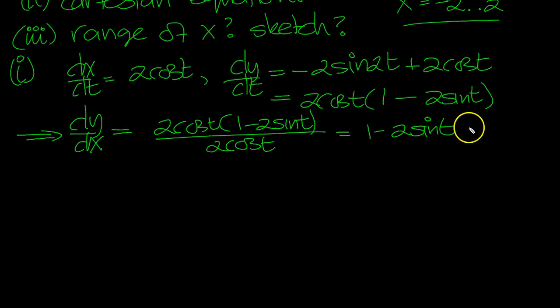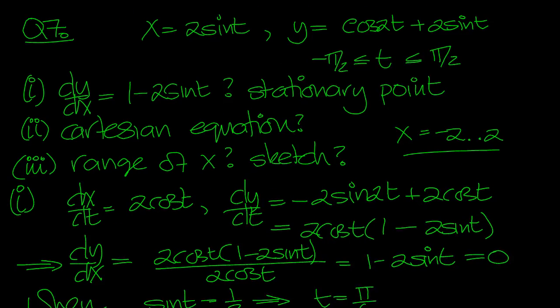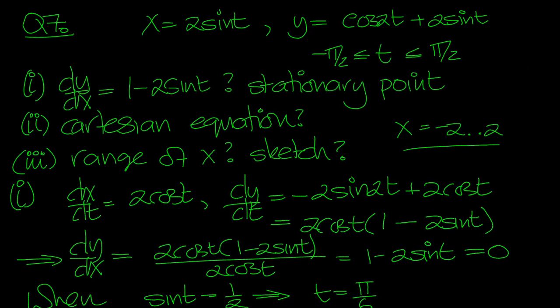Stationary point happens when it equals 0, when sine t is equal to 1/2. That tells us that t is π/6, 30 degrees. When t varies from minus π/2 to π/2, it's only going to be 30 degrees.